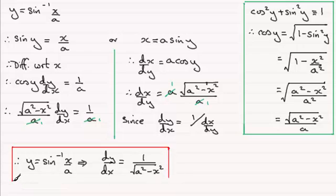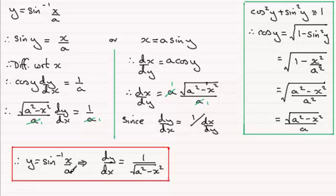Although generally the formula book will have this result. It's worth noting that if the constant a equals 1, then y equals the inverse sine of x, and dy by dx simplifies to just 1 over the square root of 1 minus x squared.